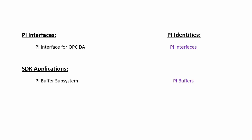Once our identities are created, we're going to need to have a way for our interface and buffer to authenticate and receive these identities. For the PI Interface, since we have PI API for Windows Integrated Security installed on the interface node, we're going to be using a mapping. If your interface node does not have PI API for Windows Integrated Security installed, you will instead use a PI Trust.